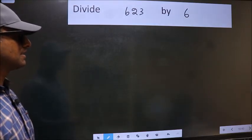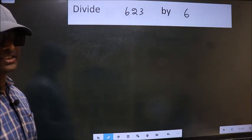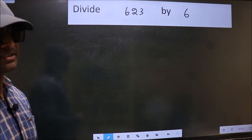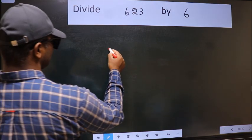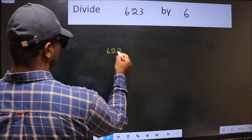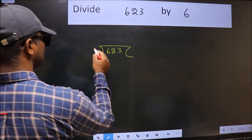Divide 623 by 6. To do this division, we should frame it in this way: 623 here and 6 here.